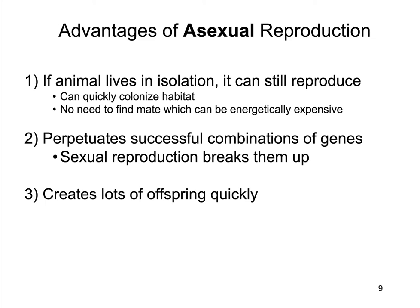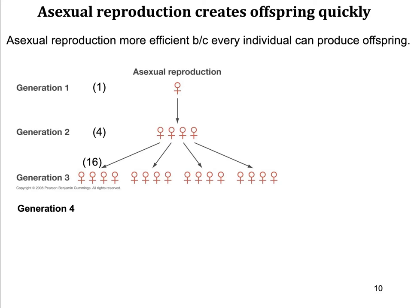The last major advantage is that asexual reproduction creates lots of offspring very quickly relative to sexual reproduction. Asexual reproduction is much more efficient because every individual can produce offspring. In asexual reproduction, every individual acts functionally like a female — every individual is capable of producing offspring on their own. So if in Generation 1 each individual produces four copies of themselves, those four are also each capable of creating four more. How many individuals will you have in Generation 4?